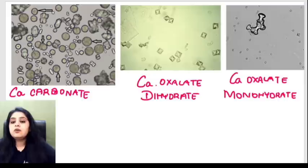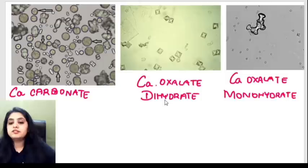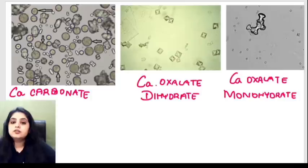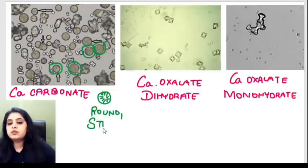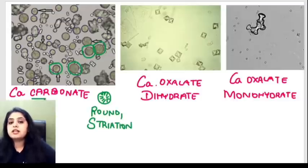Now we have three calcium varieties: calcium carbonate, calcium oxalate dihydrate, and calcium oxalate monohydrate. Calcium carbonate is round like a wheel with striations. Think of a wheel — 'car' in calcium carbonate should remind you of that wheel kind of shape.